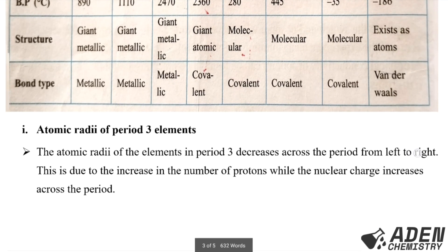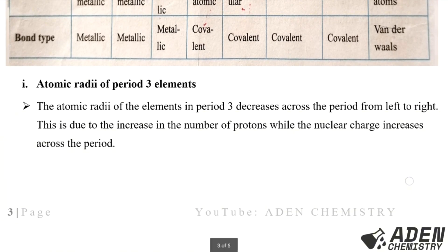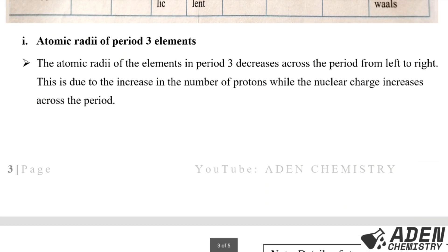Next, the atomic radius of period 3 elements. The atomic radius of elements in period 3 decreases across the period from left to right, from sodium to argon. This is due to the increase in the number of protons, as the nuclear charge increases across the period.